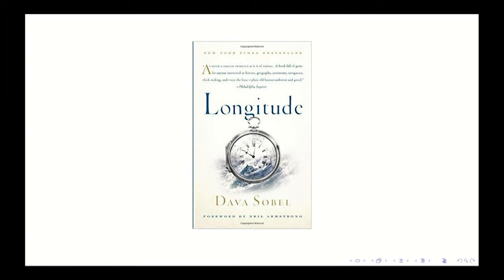So the British government tried to solve this problem and failed, and then they said, alright, we'll give a prize to anyone who can figure out how to solve this problem. Many of the most famous scientists at the time, Isaac Newton worked on this problem, for example, a lot of very famous astronomers, Edmund Halley. All of them thought that the solution would be some kind of astronomical solution. So they worked on this for a long time and failed. Over and over and over again they failed.